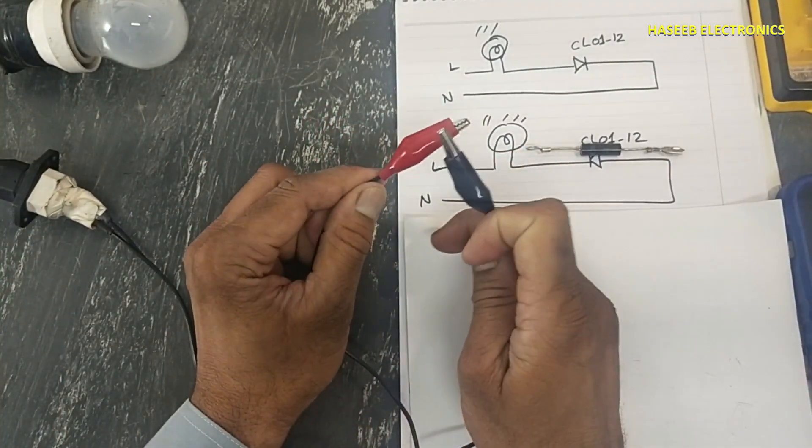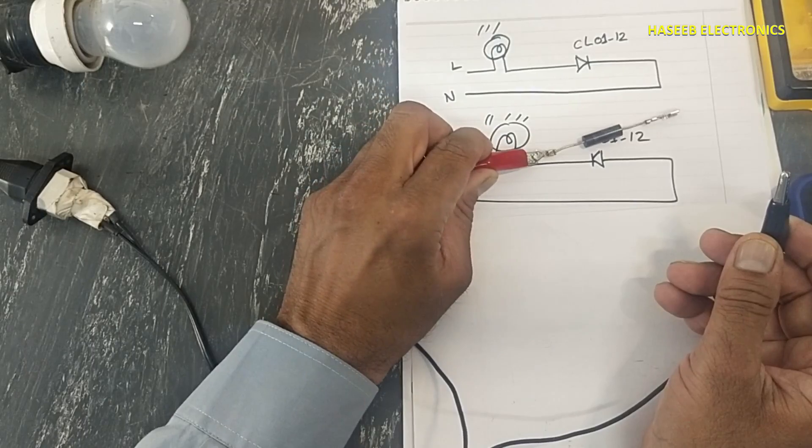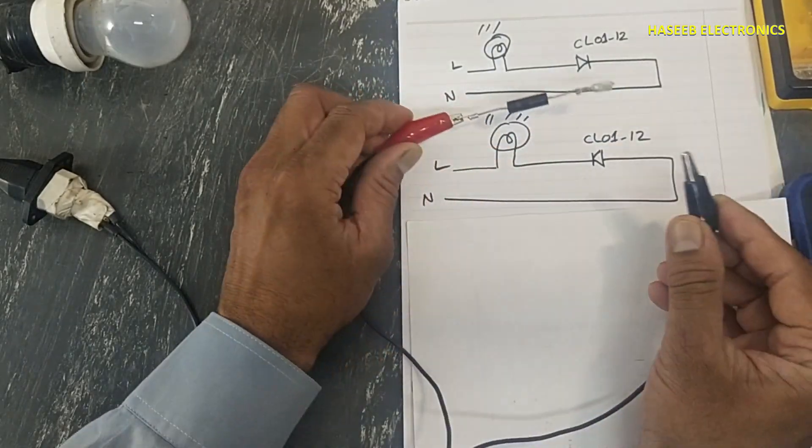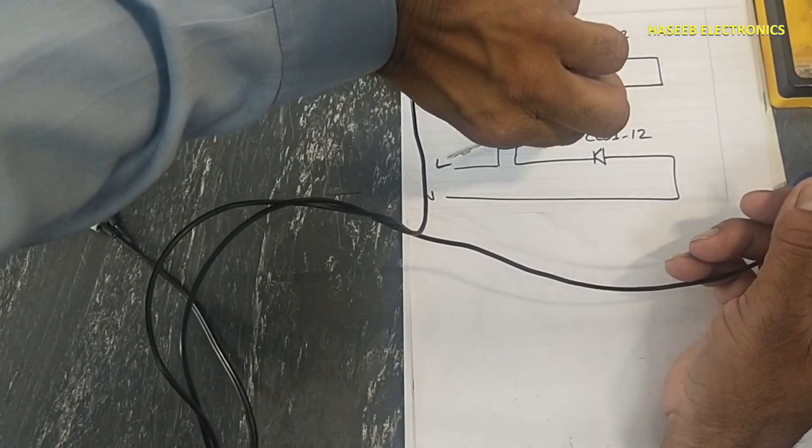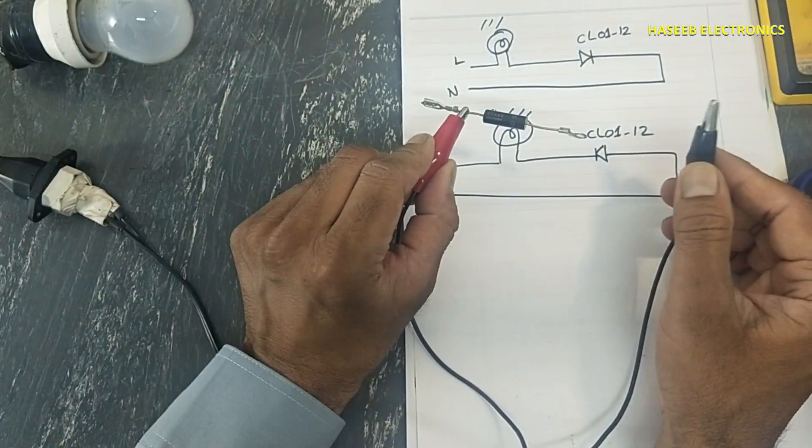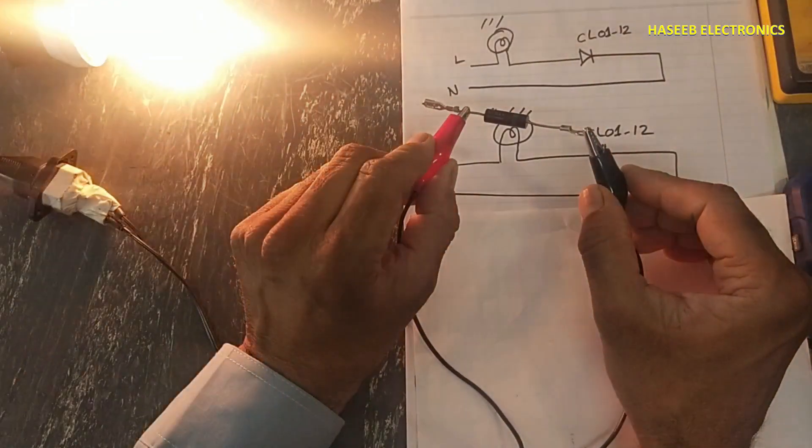I am using series lamp. If I connect here one lead, here second lead, the lamp is turning on. If I reverse the leads, the lamp is turning on.